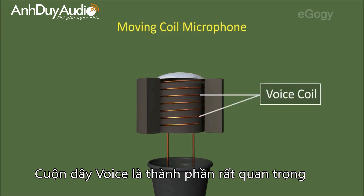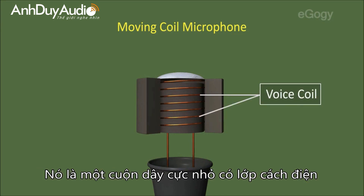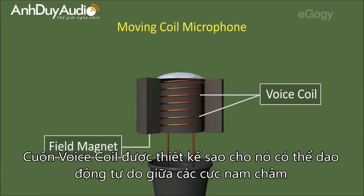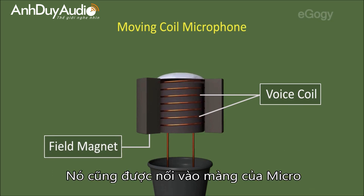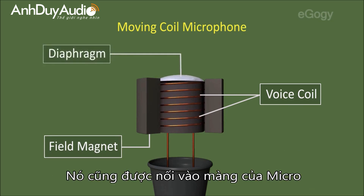The Voice Coil is an important part of the Moving Coil Microphone. It is a coil of very thin insulated wire. The Voice Coil is designed such that it can vibrate freely in between the poles of a magnet. This coil is connected to a diaphragm.